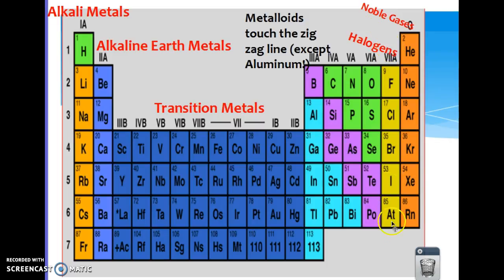This group 18 here is, excuse me, 17 is a special group called halogens, and then your last column are very special gases called noble gases. We'll focus on those in just a second.